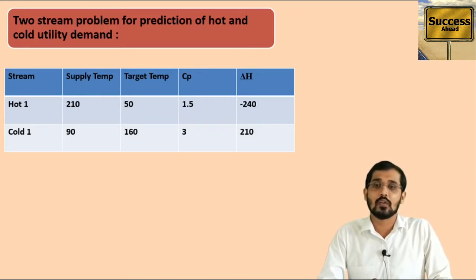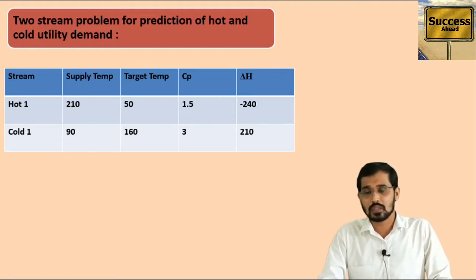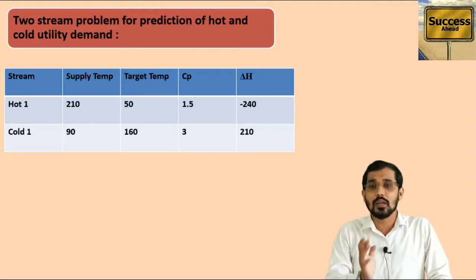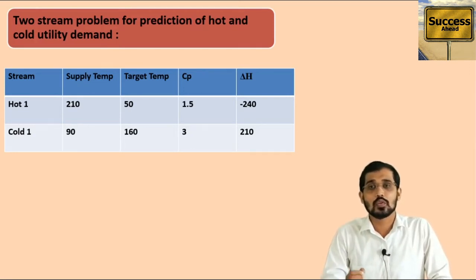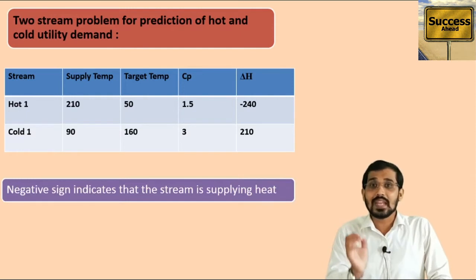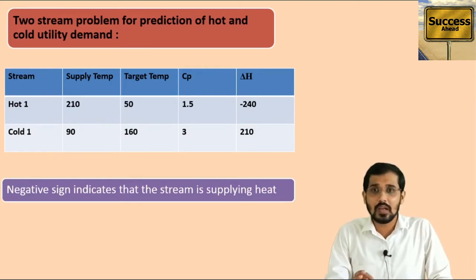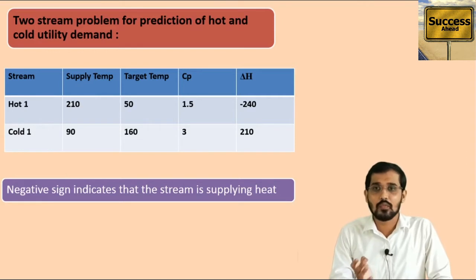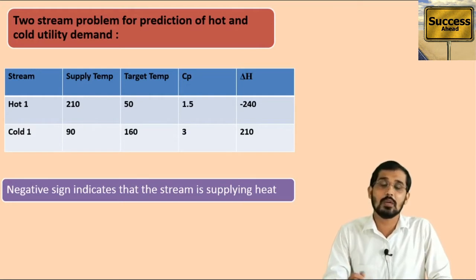Why is there a negative sign in front of the enthalpy for the hot stream, but not for the cold stream? Because we are removing excess heat from the hot stream by using the cold stream. So whenever a hot stream is available in the data, you will have a minus sign in front of the enthalpy. This negative sign indicates that the stream is supplying heat — that is, the hot stream.